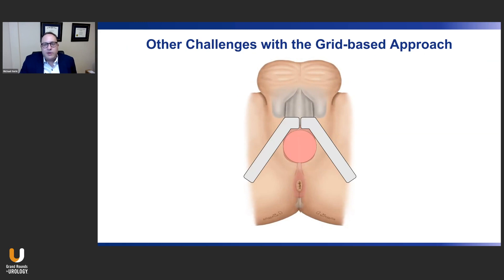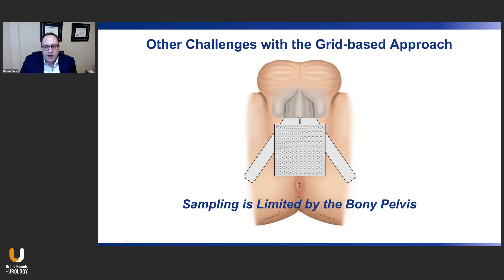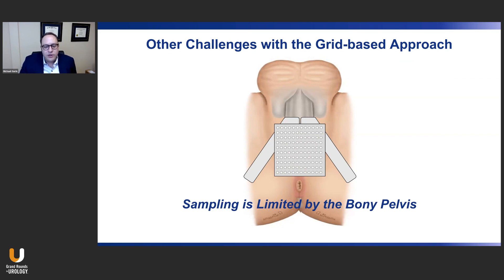Another challenge with the grid-based approach is that the bony pelvis interferes with the passage of needles through the grid. When the grid is superimposed on the image of the prostate and bony pelvis, many needle holes are in the path of the pubic bones. Because you must adhere to a straight-on trajectory with the biopsy needles, it becomes difficult to sample all aspects of the prostate using the grid-based approach.